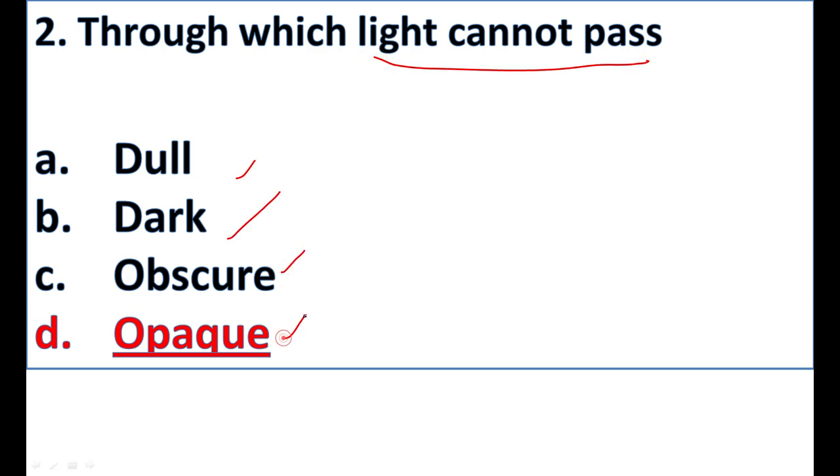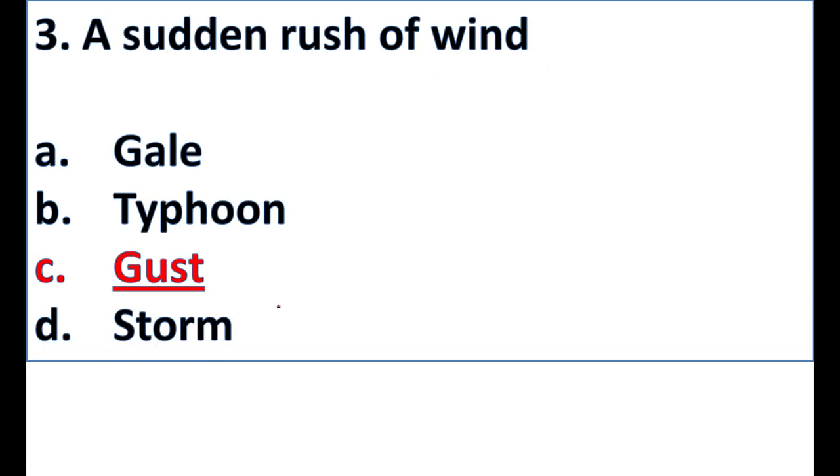Second question: through which light cannot pass. Dull, dark, obscure, opaque. Opaque is the right answer.